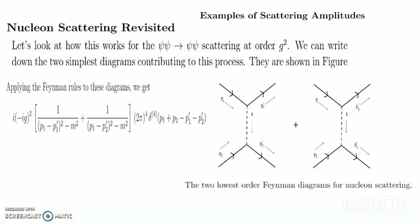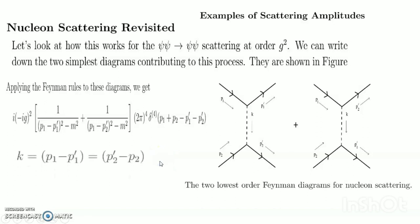Applying the Feynman rules to this diagram, we get equations which agree with the calculation performed earlier. There is a nice physical interpretation of these diagrams. We talk of the nucleons exchanging a meson, which in the first diagram has momentum k = p₁ − p₁′ = p₂′ − p₂. This meson does not satisfy the usual energy-momentum dispersion relation because k² ≠ m². The meson is called a virtual particle and is said to be off-shell. Heuristically, it can't live long enough for its energy to be measured to great accuracy.